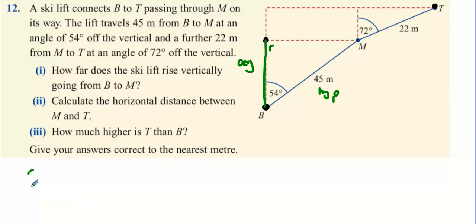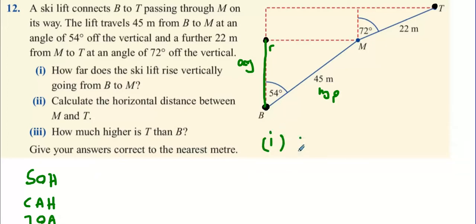SOH-CAH-TOA: sine equals opposite over hypotenuse, cos equals adjacent over hypotenuse, and tan equals opposite over adjacent. So we're going to use cos 54 degrees. Cos 54 degrees equals your adjacent, which we'll call X, divided by our hypotenuse, which is 45.